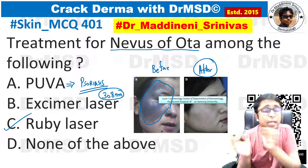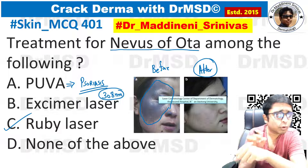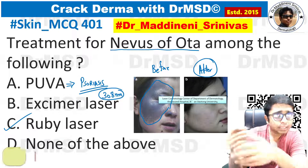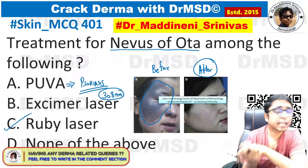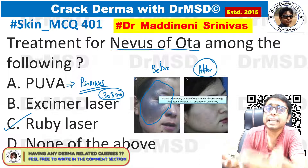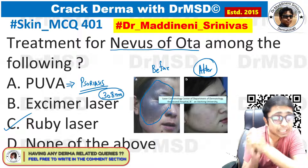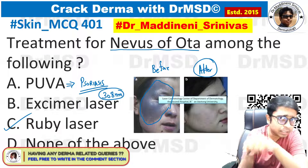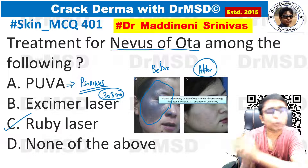If vitiligo patches are only a few over the body, we need not ask the patient to come to the office for narrow-band UVB phototherapy. Instead, they can buy a handheld excimer laser device and give themselves phototherapy at the comfort of their home.